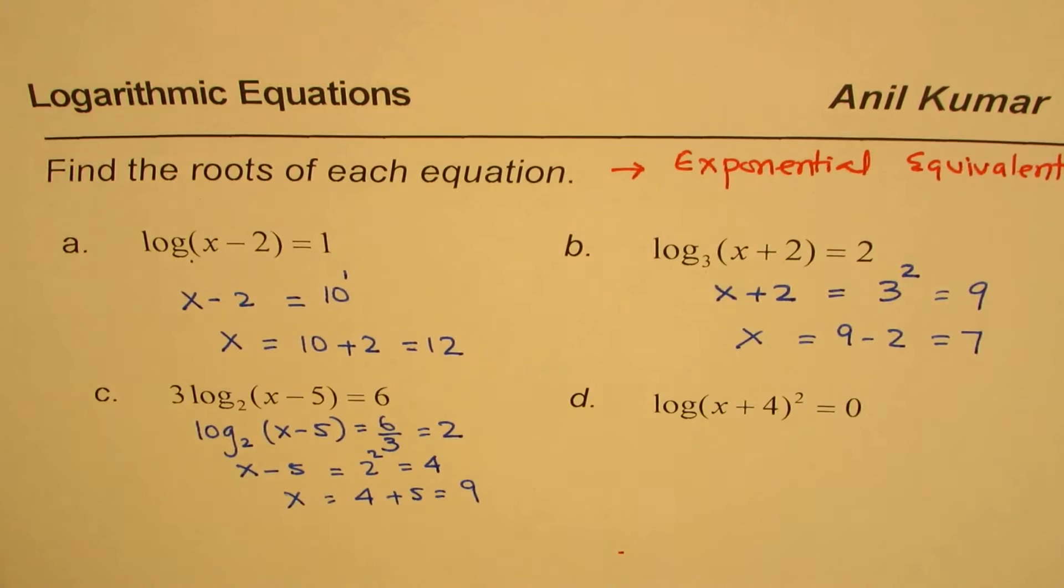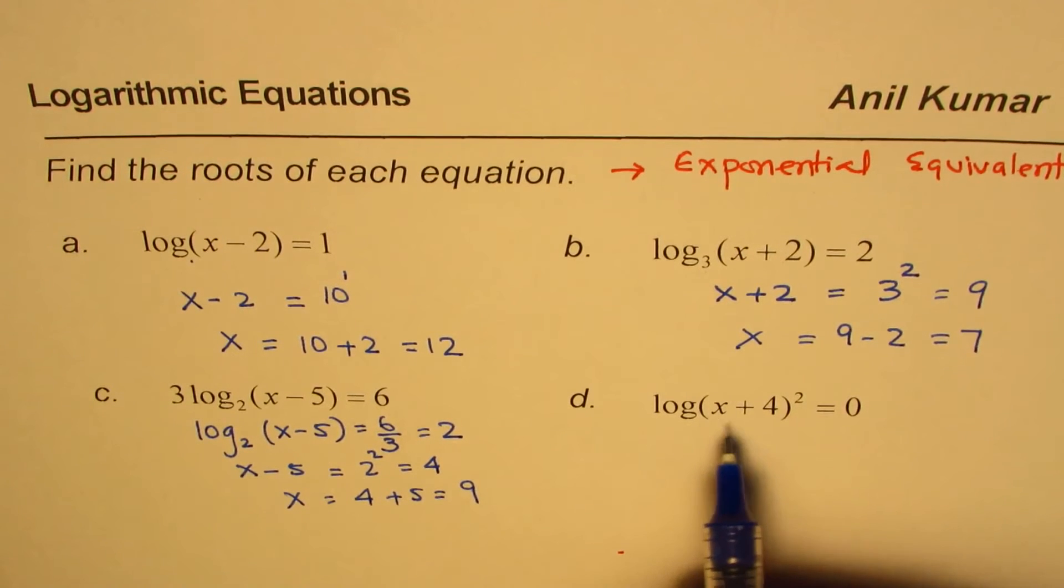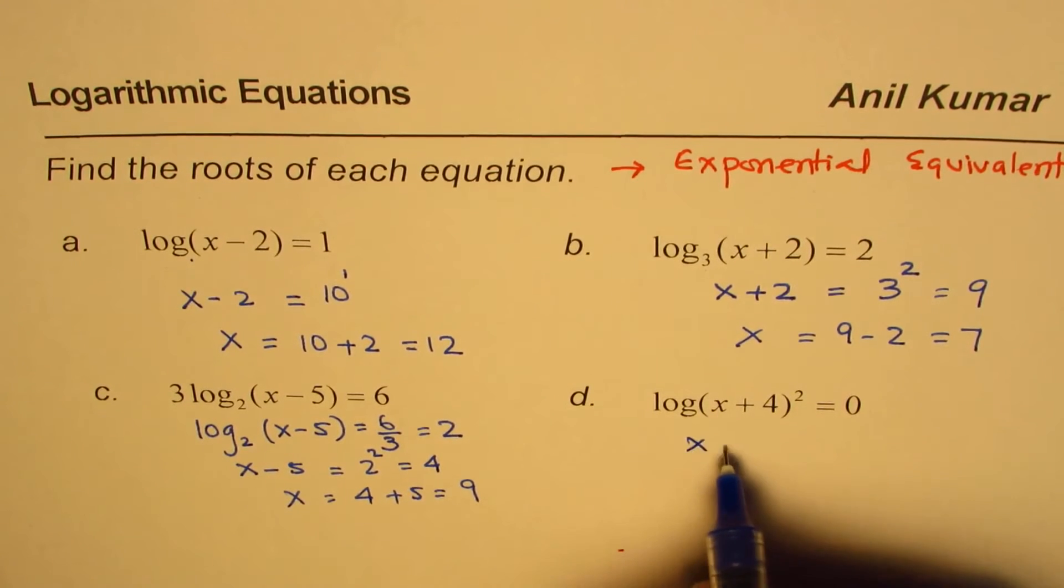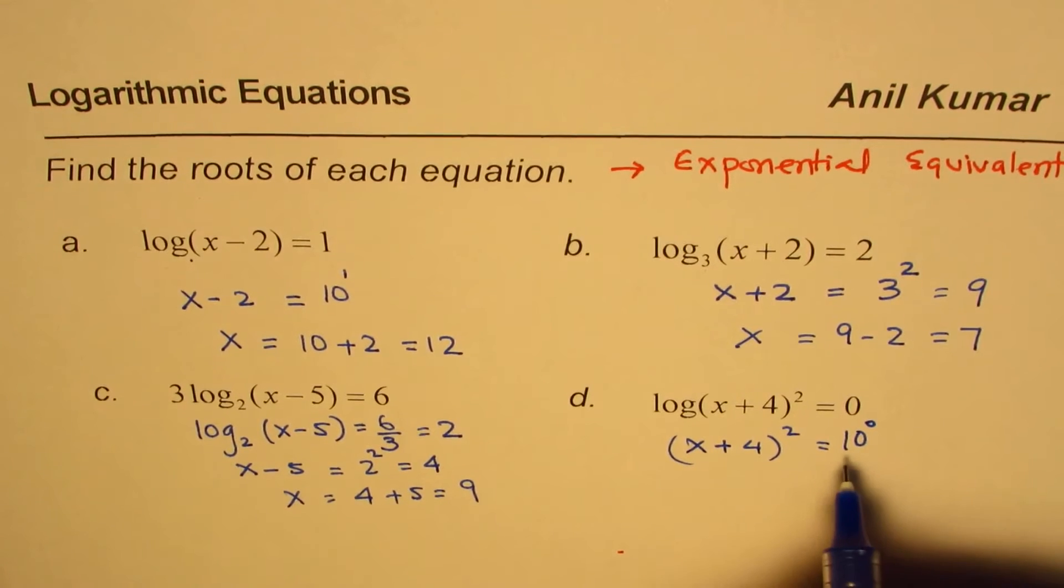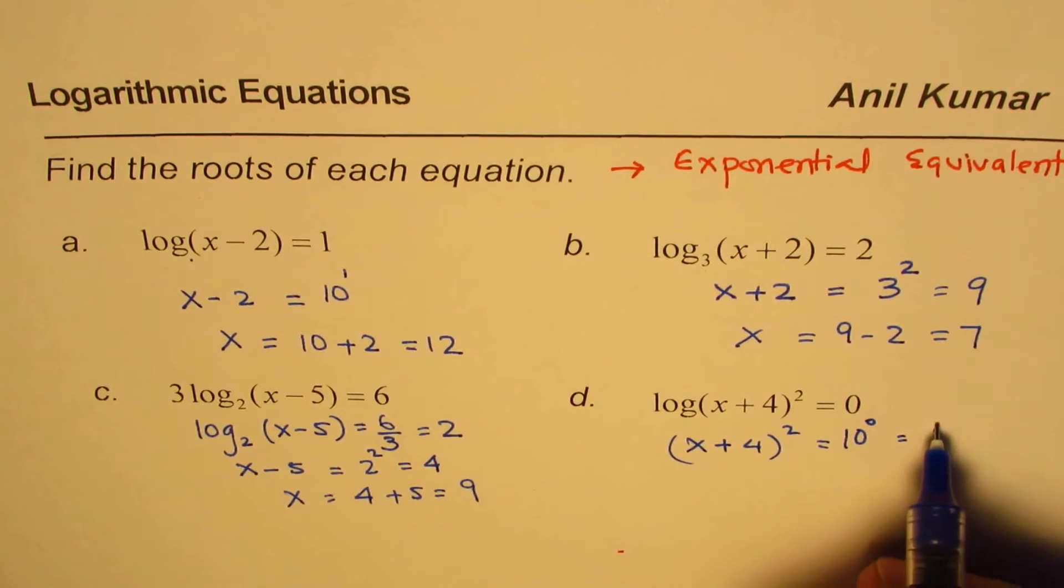This one here is very interesting. The base is 10. So it gets as x plus 4 whole square equals 10 to the power of 0. And what is 10 to the power of 0? Anything to the power of 0 is 1. This is important to understand.